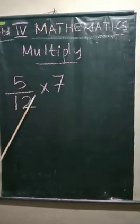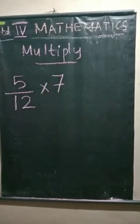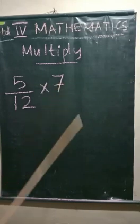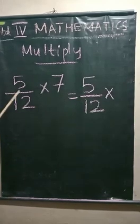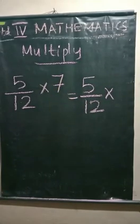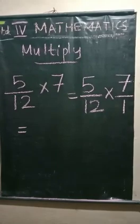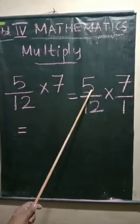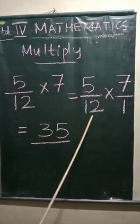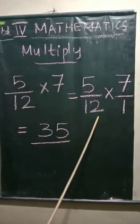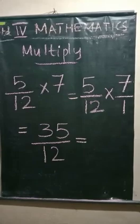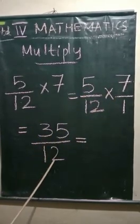Next, 5 by 12 into 7. Change the whole number into its fractional form. First write 5 by 12, into fractional form of 7, which is 7 by 1. Now, what is the next step? Numerator into numerator. Which are the numerators? 5 sevens are 35. Next, denominator into denominator. Which are 12 and 1? 12 ones are 12. The answer is 35 by 12.